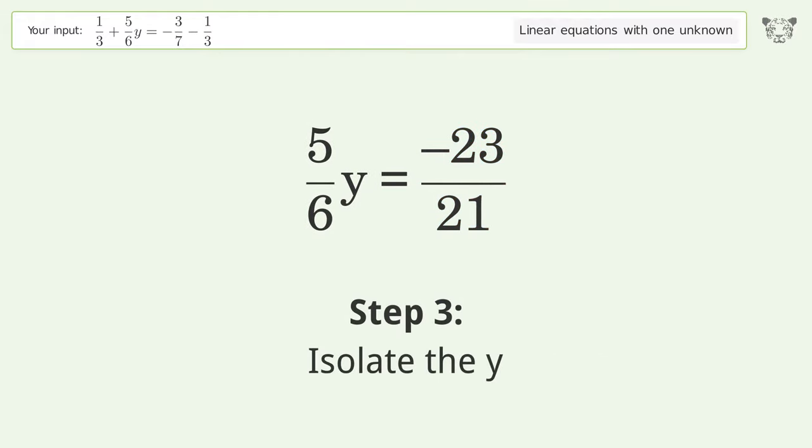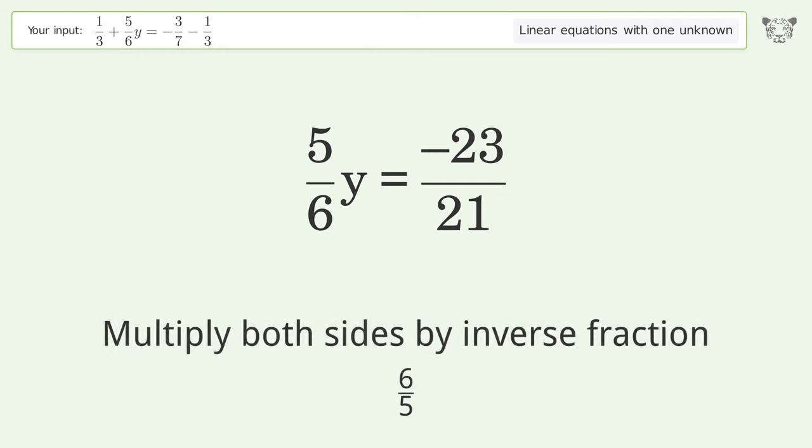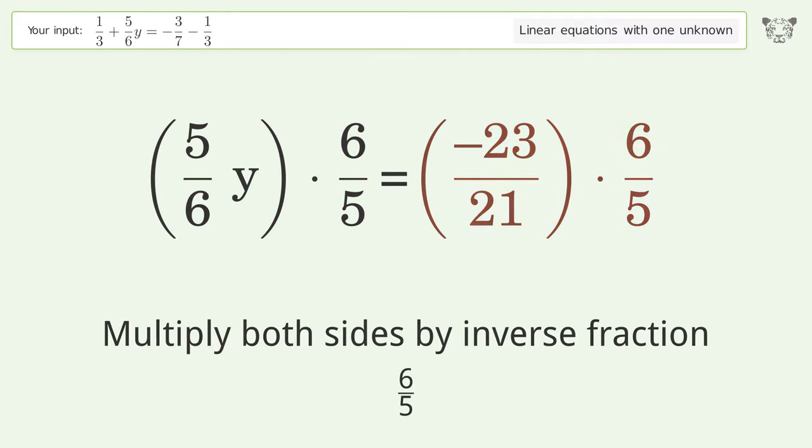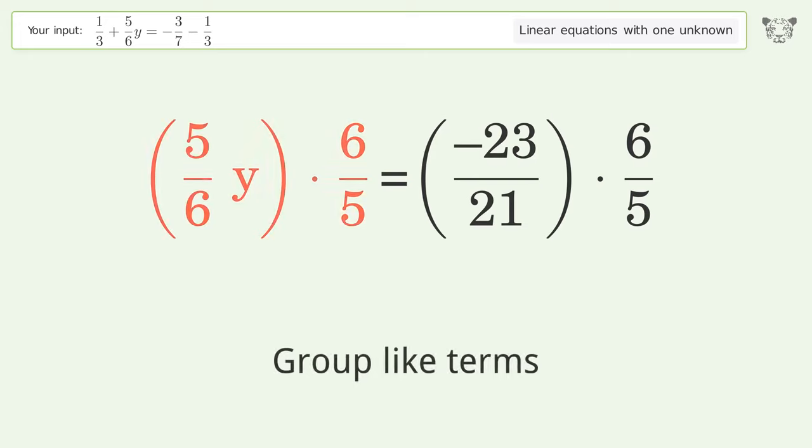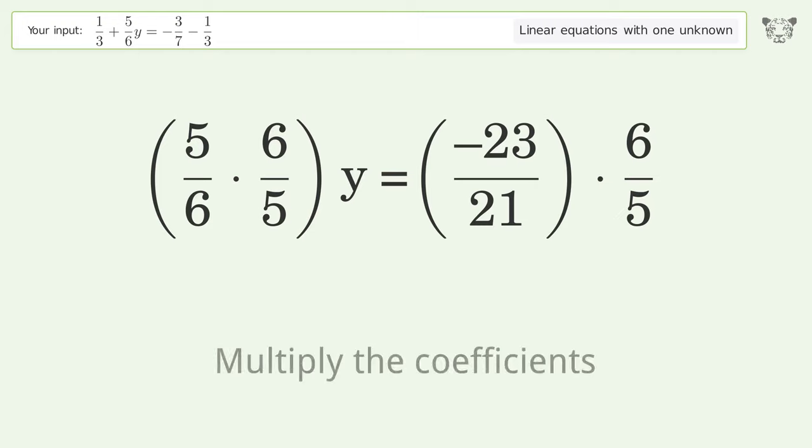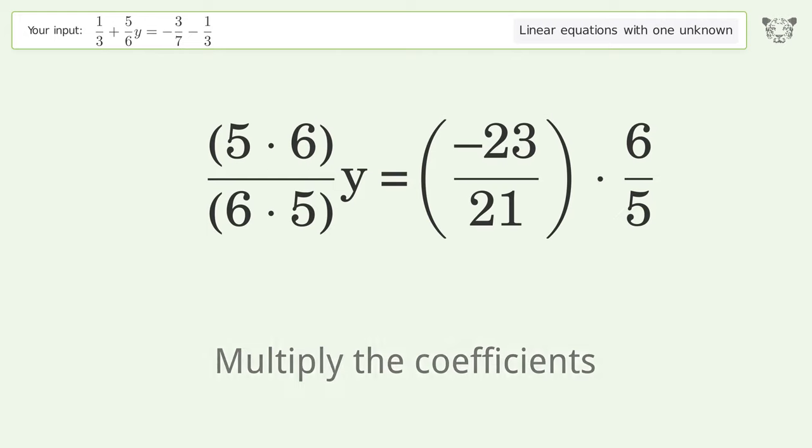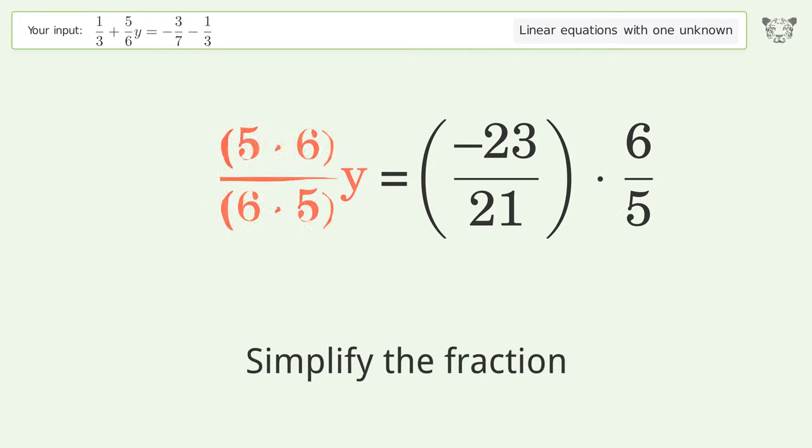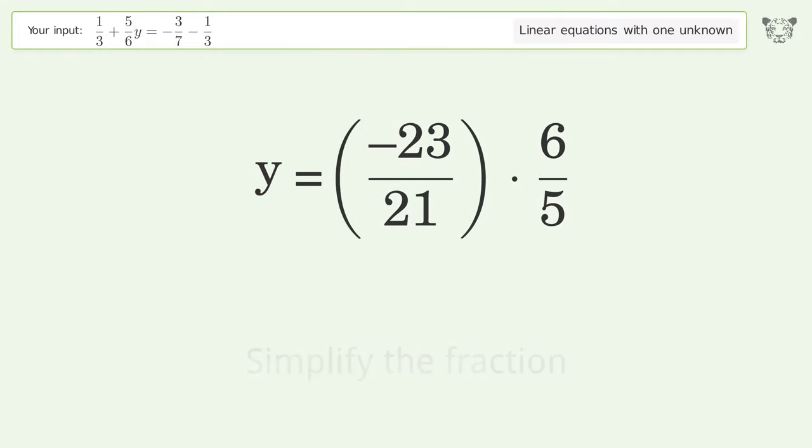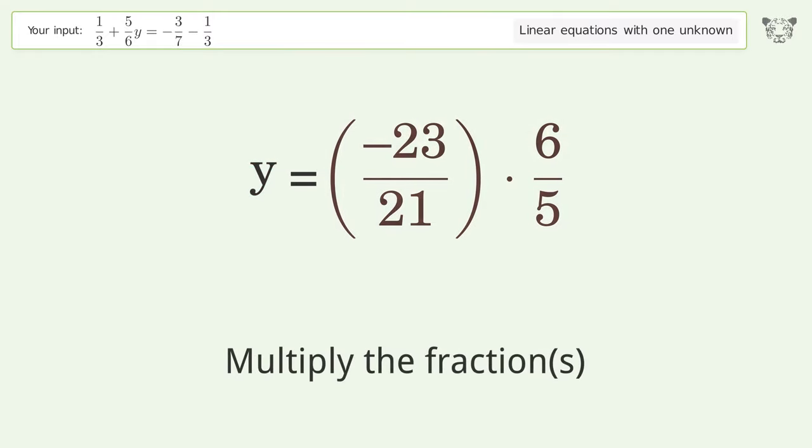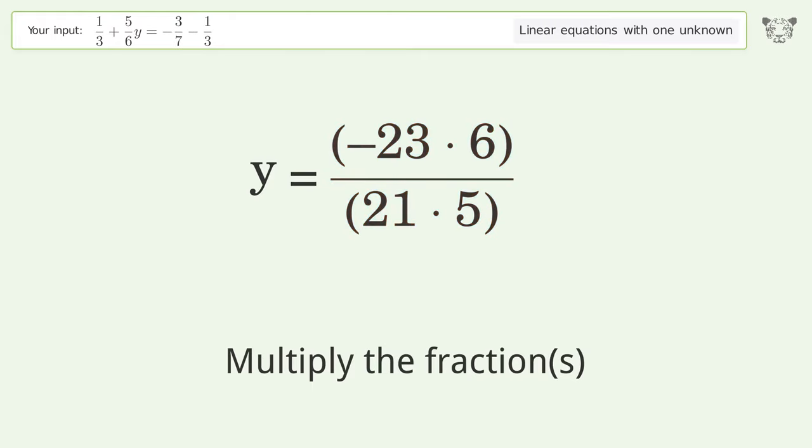Isolate the y. Multiply both sides by inverse fraction 6 over 5. Group like terms. Multiply the coefficients. Simplify the fraction. Multiply the fractions. Simplify the arithmetic.